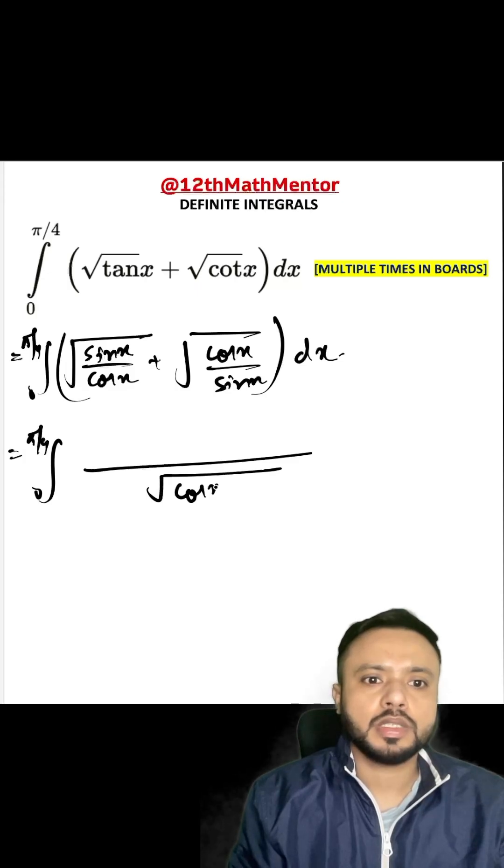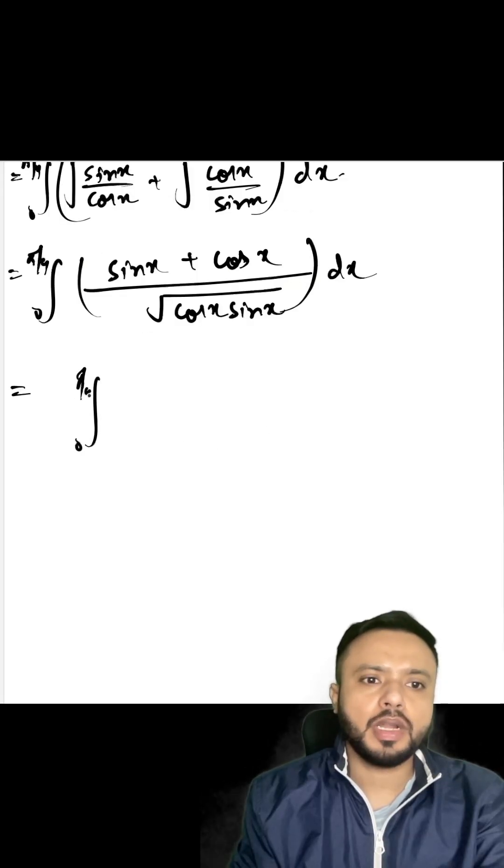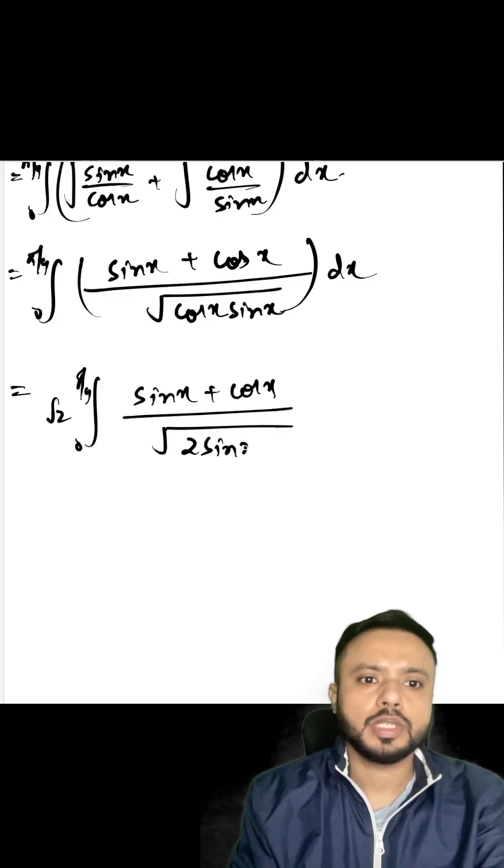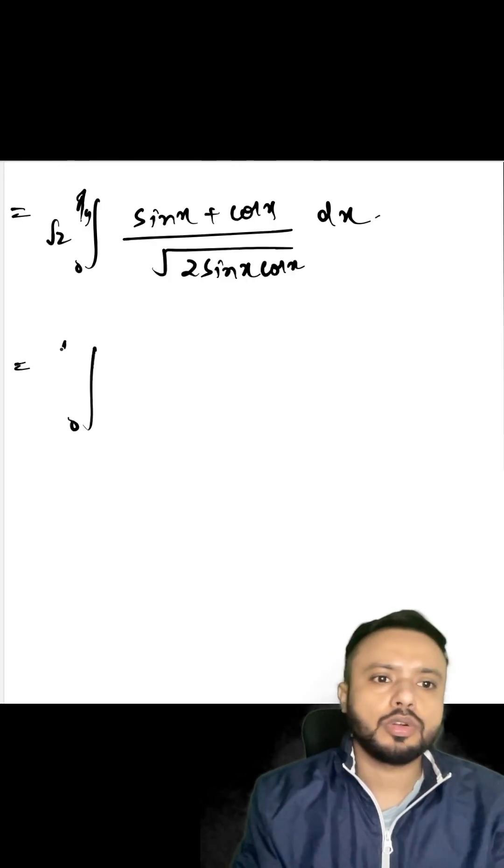It would be root of cos x sine x and here I'll be left with sine x plus cos x dx. Now I will multiply and divide the numerator by root 2, so I'll get root 2 sine x plus cos x upon root of 2 sine x cos x dx from 0 to π/4.